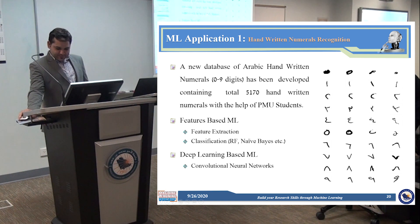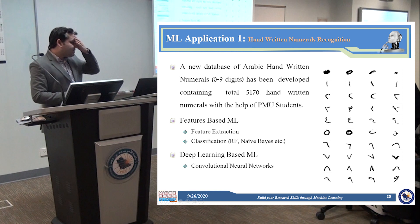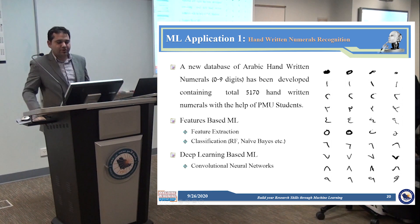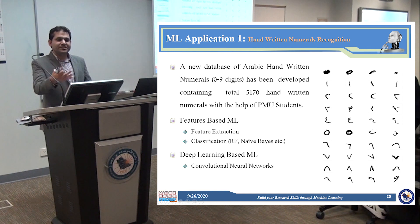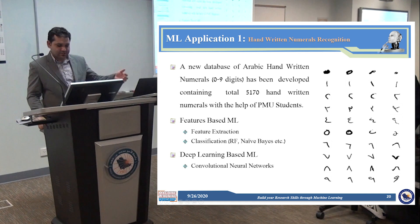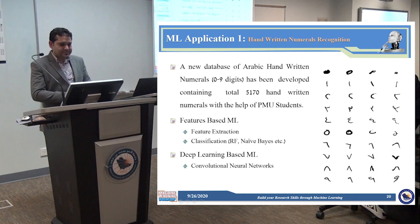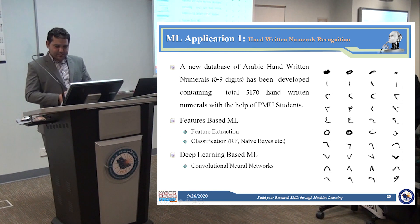In the first example — handwritten numeral recognition — whenever you apply machine learning, you need to have a dataset. If the dataset is available online, you can use it to improve the results and see how much accuracy you get with different AI and machine learning algorithms, or with some changes in the algorithms you can get enhanced results and claim a better technique with better parameters, which could be a publication. If the dataset is not available, you can build a new dataset, as some students in senior design projects are doing for numeral recognition.